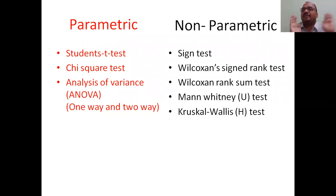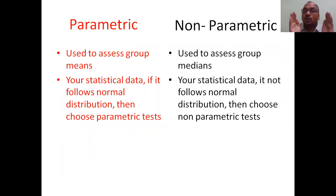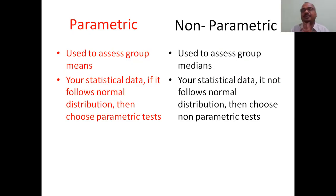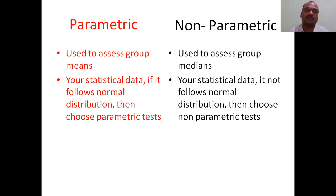Now let us see the difference. Parametric tests are used to assess group means — whether there are two, three, or four groups, you are comparing their means. Whereas non-parametric tests assess group medians. You already know mean, median, and mode from my earlier video — go watch that.